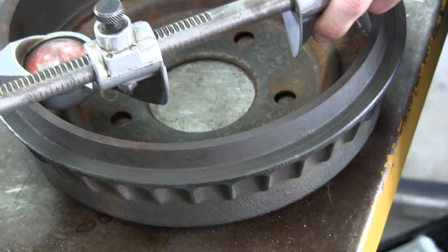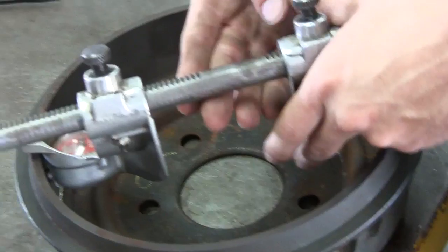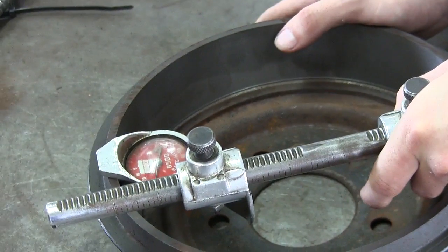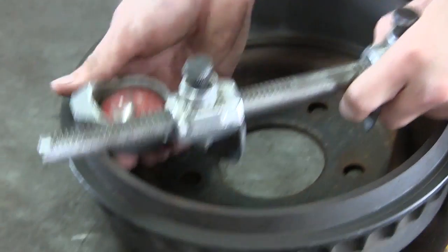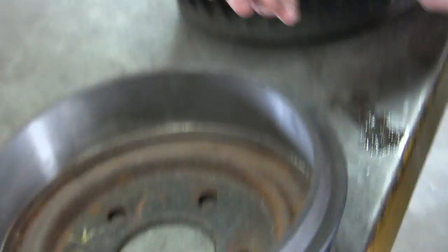You got nine and then you got 40 thousandths, so that's 9.040, right? And what is your drum not supposed to be bigger than? 9.060. So you're twenty thousandths under on that one - that drum would be okay. Now show us how you do it on one that doesn't land exactly on nine.